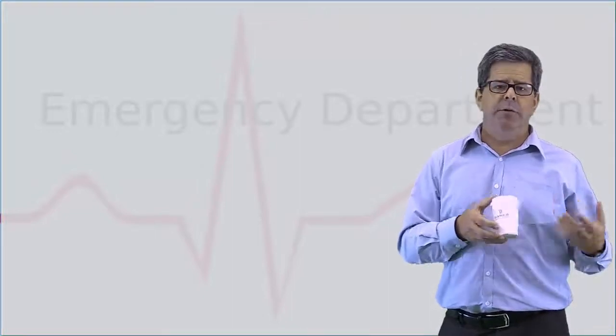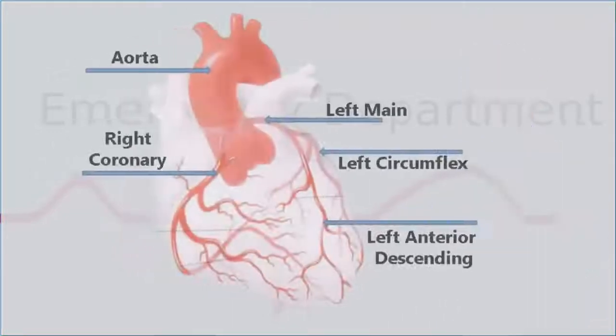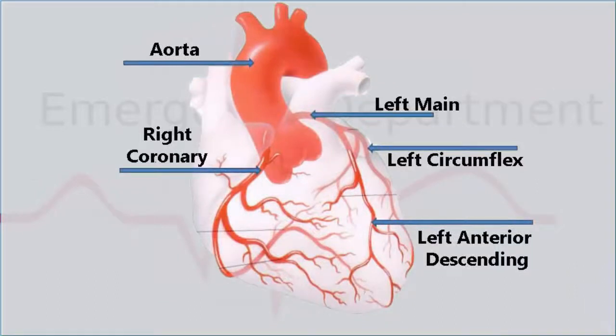So remember that the right coronary artery supplies the right ventricle and of course it's got branches to the SA node, to the AV node and marginal branches, etc. And if it's a dominant right coronary, you can go right posteriorly.